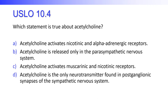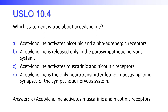Which statement is true about acetylcholine? Acetylcholine activates nicotinic and alpha-adrenergic receptors. Acetylcholine is released only in the parasympathetic nervous system. Acetylcholine activates muscarinic and nicotinic receptors. Acetylcholine is the only neurotransmitter found in postganglionic synapses of the sympathetic nervous system. The correct answer is C — it activates muscarinic and nicotinic receptors. That is true.